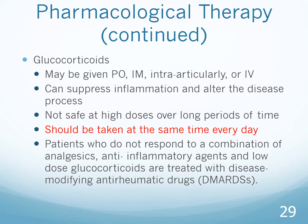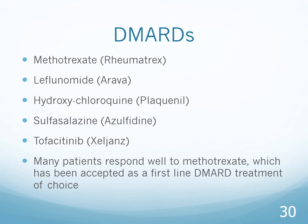Patients who do not respond to a combination of analgesics, anti-inflammatory agents, and low-dose corticosteroids are treated with disease-modifying anti-rheumatic drugs, known as DMARDs. Some DMARDs include methotrexate, Arava, Plaquenil, Azulfidine, and Xeljanz. Many patients respond well to methotrexate, which has been accepted as the first-line DMARD treatment of choice.